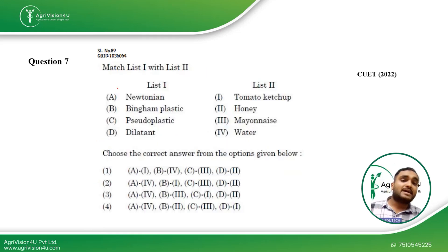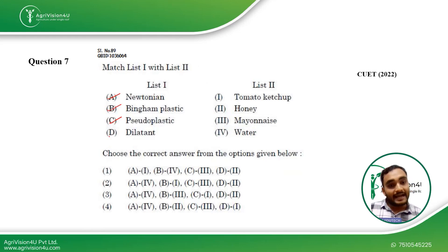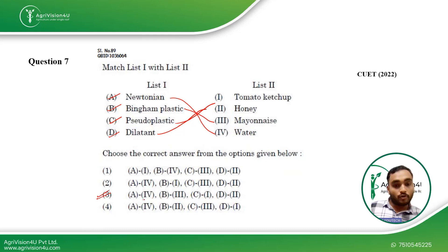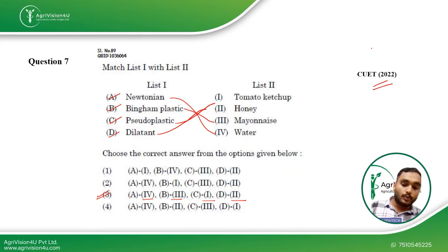Coming to the next question, we have to match the fluid types: Newtonian liquid, Bingham plastic, pseudo-plastic, and dilatant. Dilatant corresponds to honey. Newtonian liquid is water. Bingham plastic is mayonnaise, and pseudo-plastic is tomato ketchup. This makes the third option the right answer: 4, 3, 1, 2. This was also asked in CUET 2022.